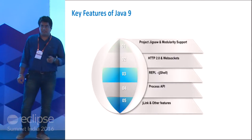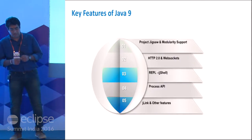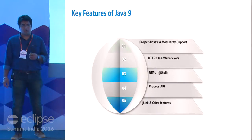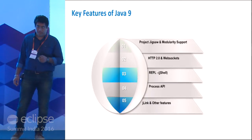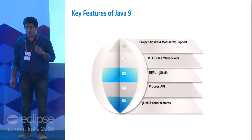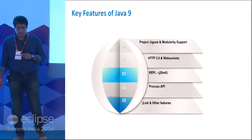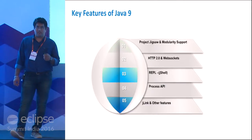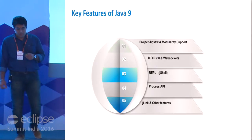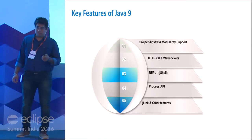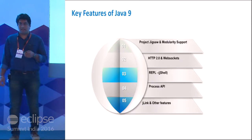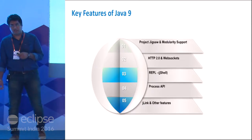So what are the key features of Java 9? The major thing which everybody is talking about is Project Jigsaw and modularity support. After that, HTTP 2.0 and web sockets, then we have REPL or JShell — these topics will be covered in various different sessions — and Process API, JLINK, multi-release jars, and other features.